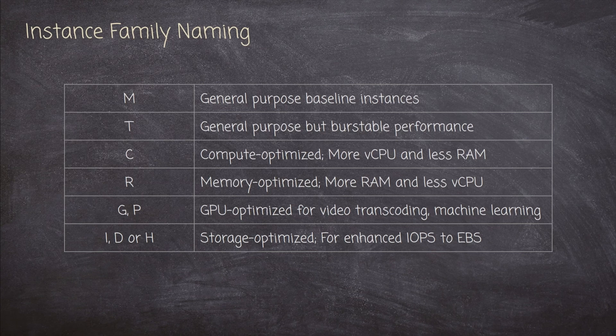If it starts with a T, that's a general purpose instance but it's also burstable — we'll talk about what burstable means in a moment. If it starts with a C, it's compute optimized, meaning it probably has more vCPUs and less RAM than a general purpose instance. If it starts with an R, that means it's memory optimized — more RAM and less vCPU. If it starts with G or P, it's GPU optimized, best for workloads like video transcoding and machine learning. I and D or H tend to be storage optimized with enhanced IOPS to EBS volumes. Back in the day, people tried to come up with mnemonics to memorize all these, but things have gotten much more complex nowadays.